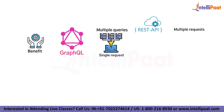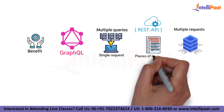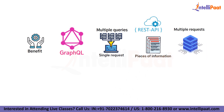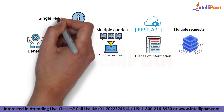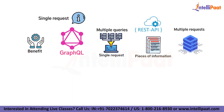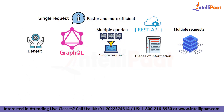With REST, you would have to make multiple requests to the server to get different pieces of information. With GraphQL, you can get all the information you need in a single request, making it faster and more efficient.